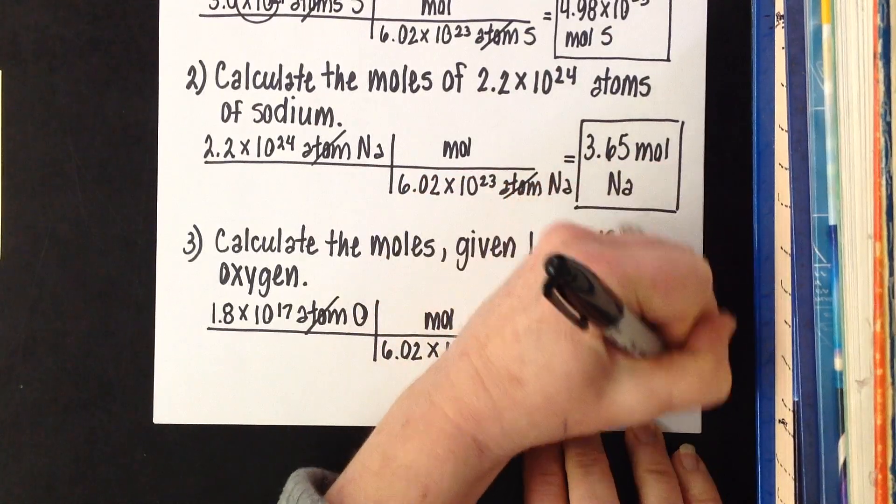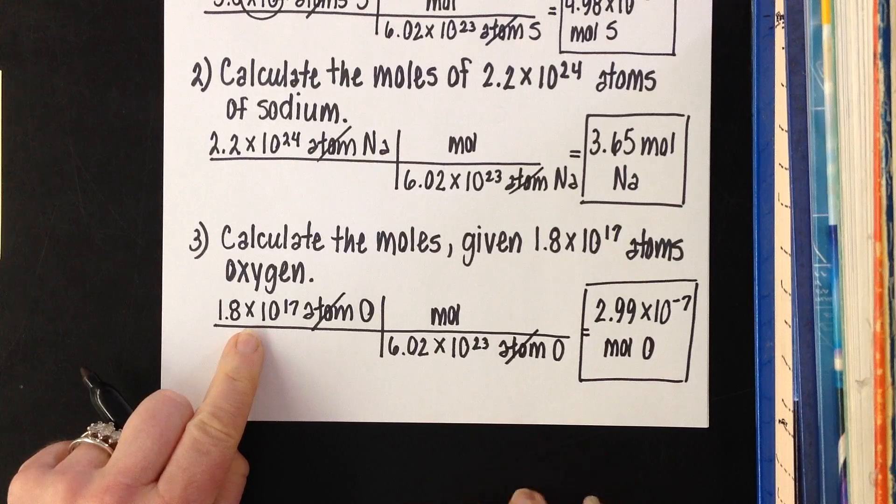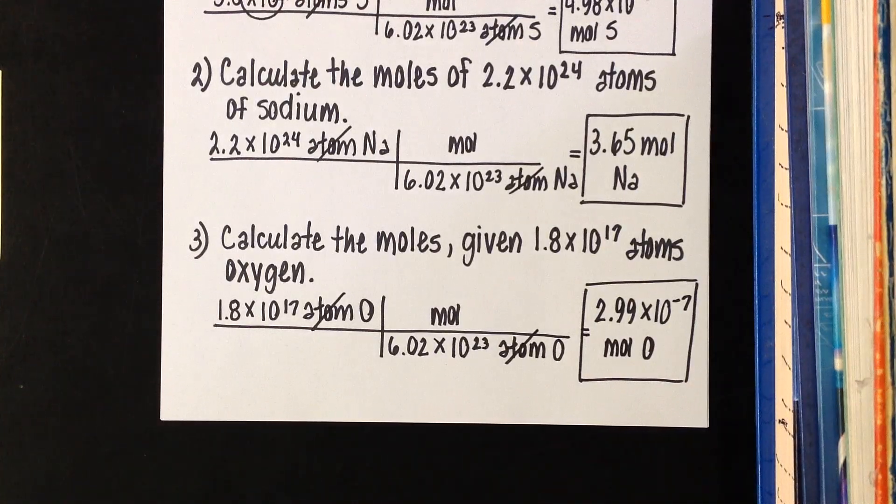That is a little tiny number, but it makes sense. Moles of oxygen. That's a tiny number because this is nowhere near one mole. So it makes sense that our actual number of moles is going to be much smaller.